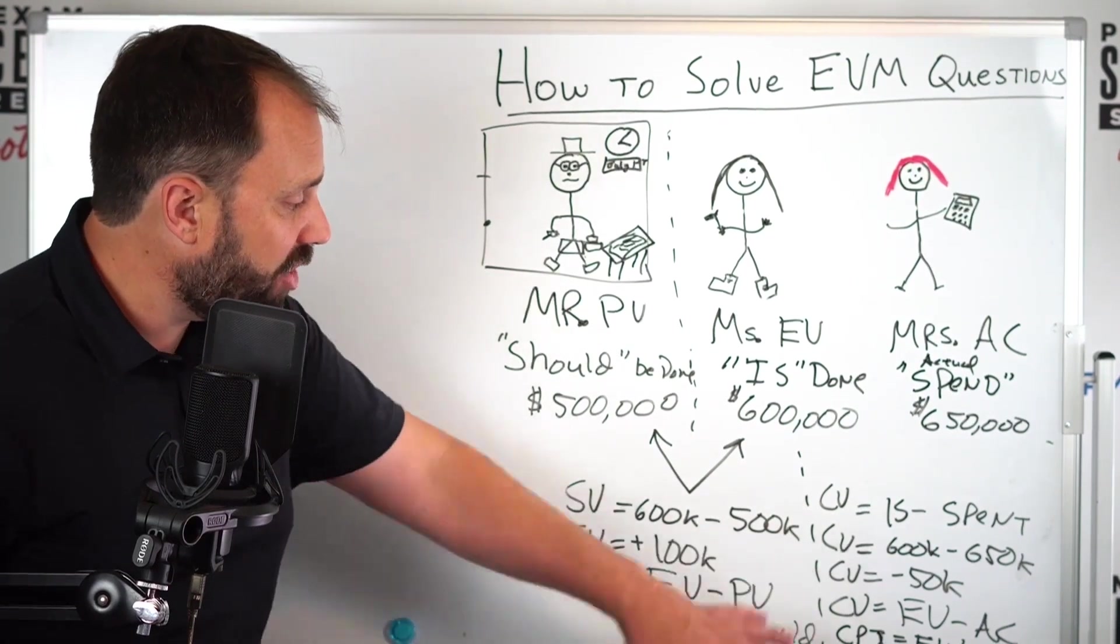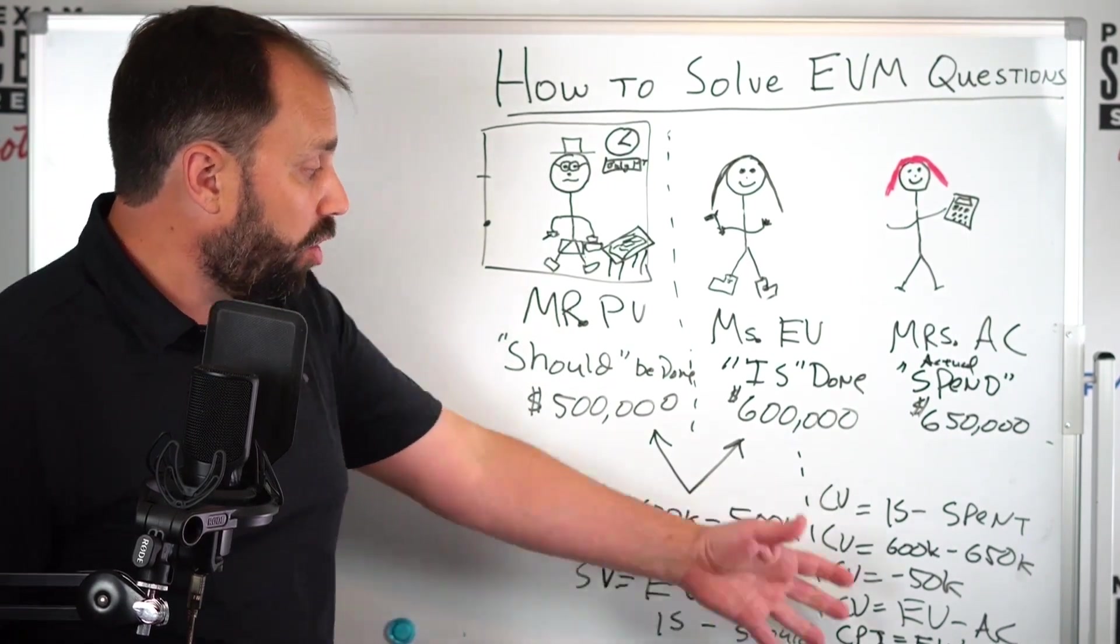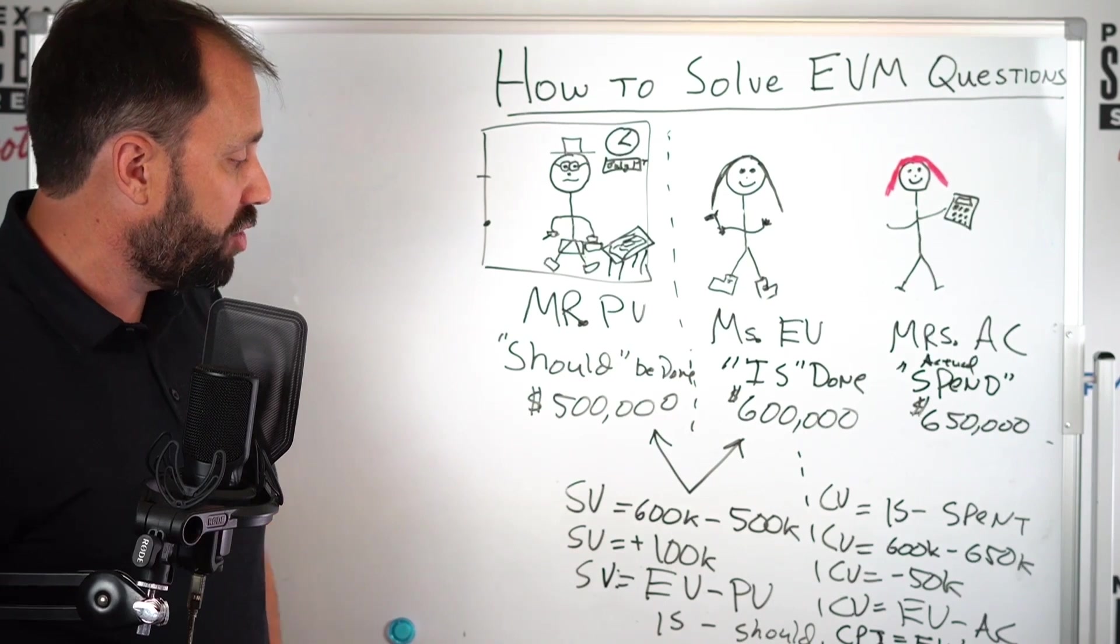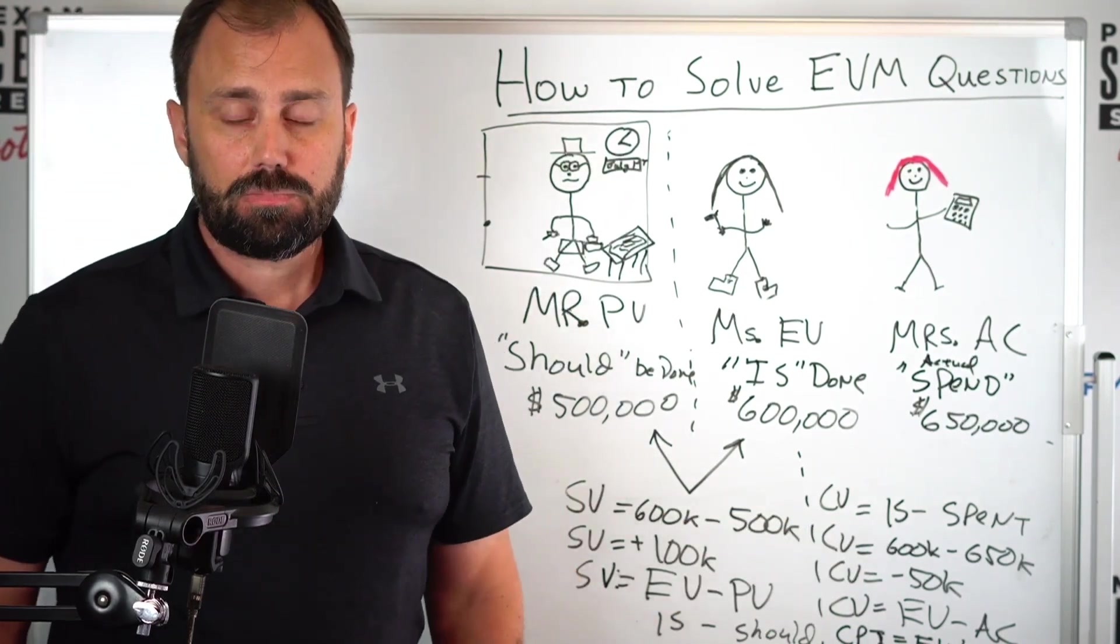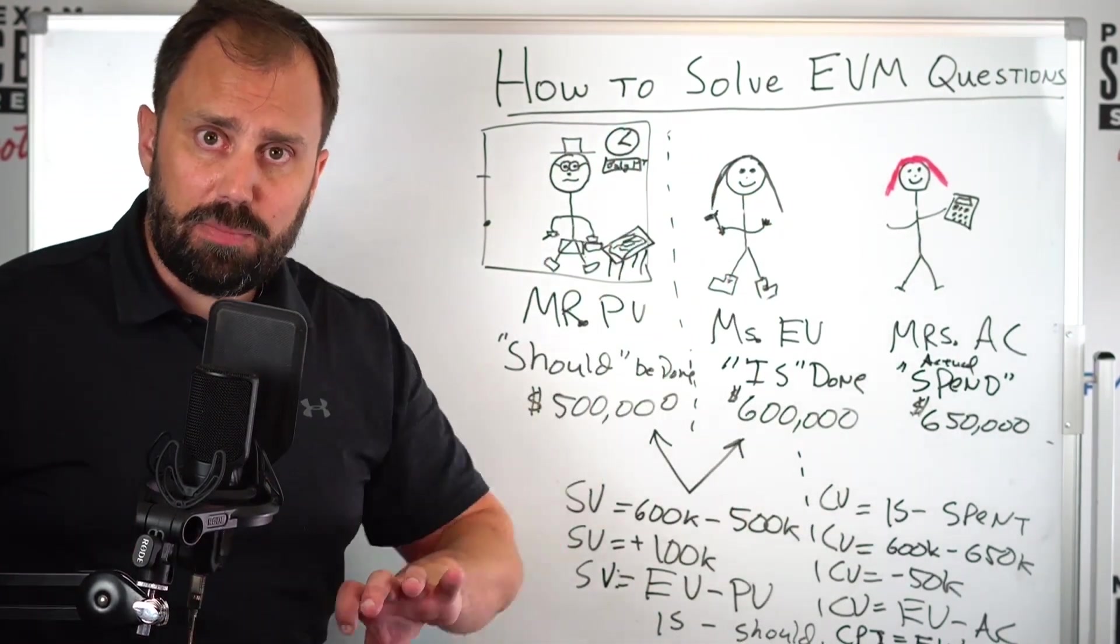So right now we have a good understanding. We could go to the boss and say, 'Hey, we're killing schedule, we got to tighten up there.' You could say our trend is going the wrong way with the CPI.